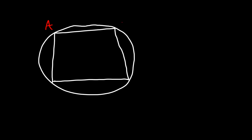In this lesson we're going to talk about inscribed polygons and circumscribed polygons. Here we have a polygon that is inscribed in a circle. A polygon is inscribed in a circle if all of its vertices are on the circle. We can see that's the case — each vertex of the quadrilateral is on the circle. So we could say that quadrilateral ABCD is inscribed in a circle.